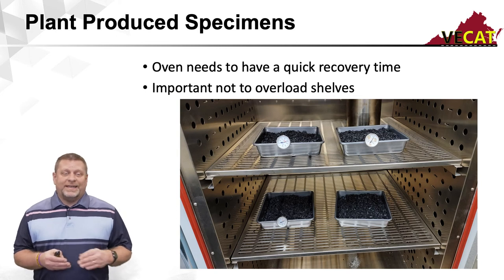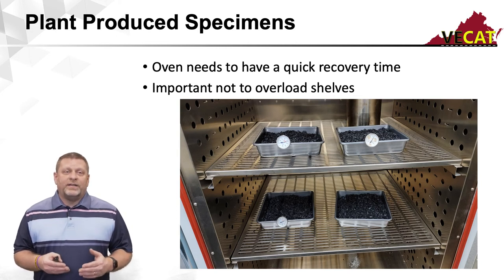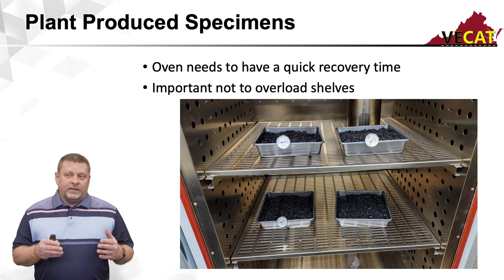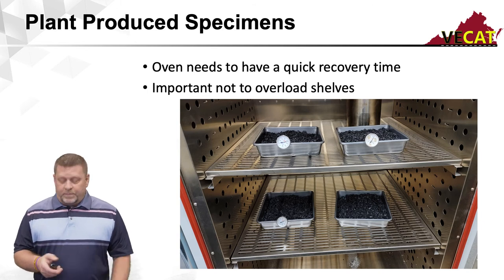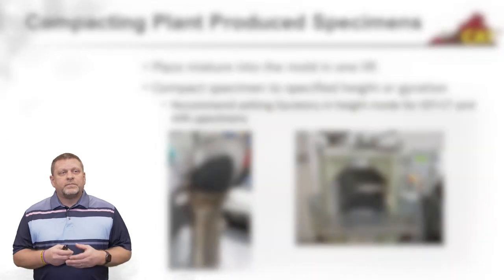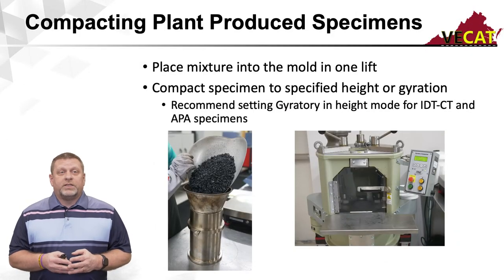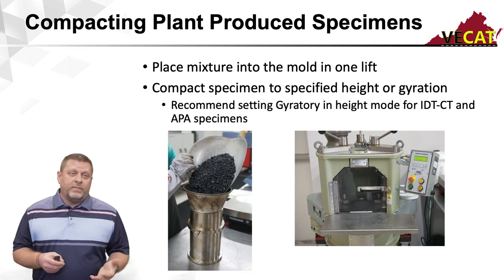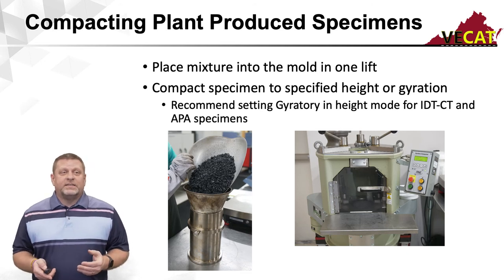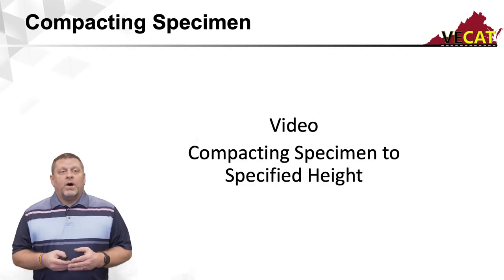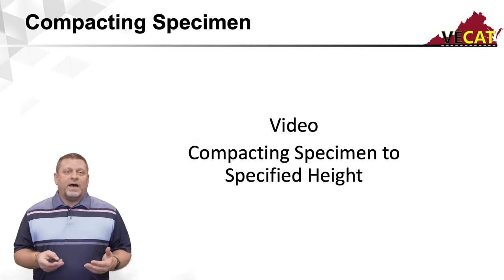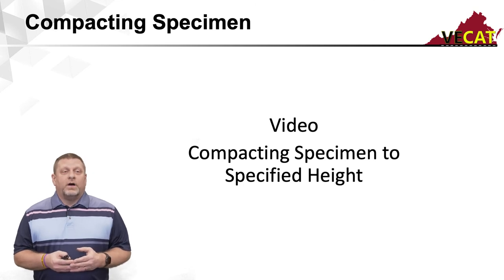None of the field mix needs any aging whatsoever. You're only trying to bring the specimen that you've split and quartered down to the proper sample size up to compaction temperature, then compact it as quickly as possible. Place the mixture in the mold in one lift and compact the specimen to height or gyrations — gyrations for volumetrics, height mode for your IDT-CTs and your APA specimens. Here is a brief video showing how to adjust your gyratory to the proper height mode and then compact the specimen.